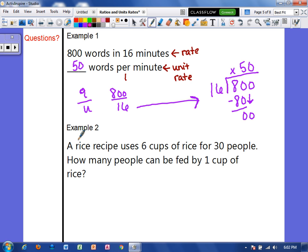Example two, a rice recipe uses six cups of rice for 30 people. How many people can be fed by one cup of rice? So again, we want to take the quantity divided by the unit.